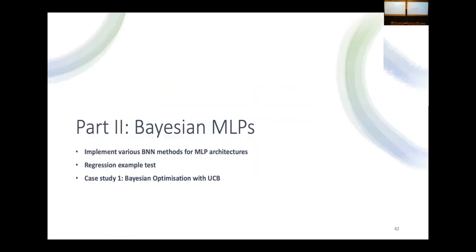In this part of the tutorial, we are going to implement some of the methods just mentioned — mean field variational inference in Bayesian neural networks — but in the simpler case of a regression example. We'll have a case study on Bayesian inference with Bayesian neural networks and see how it works.